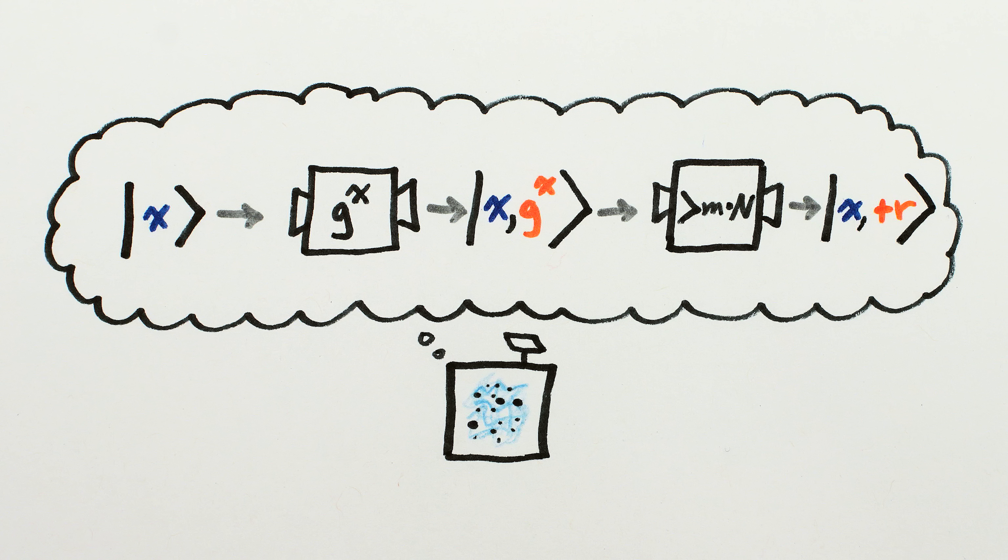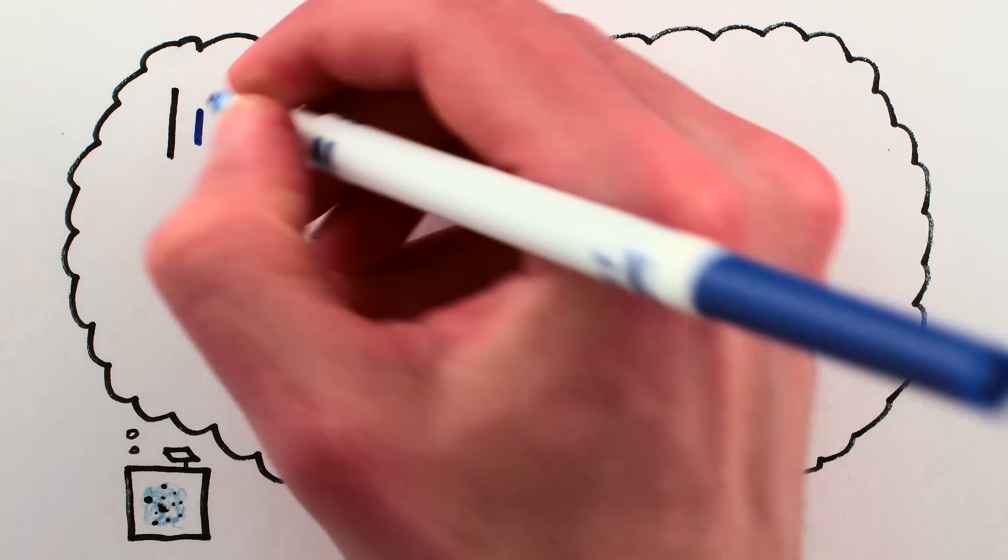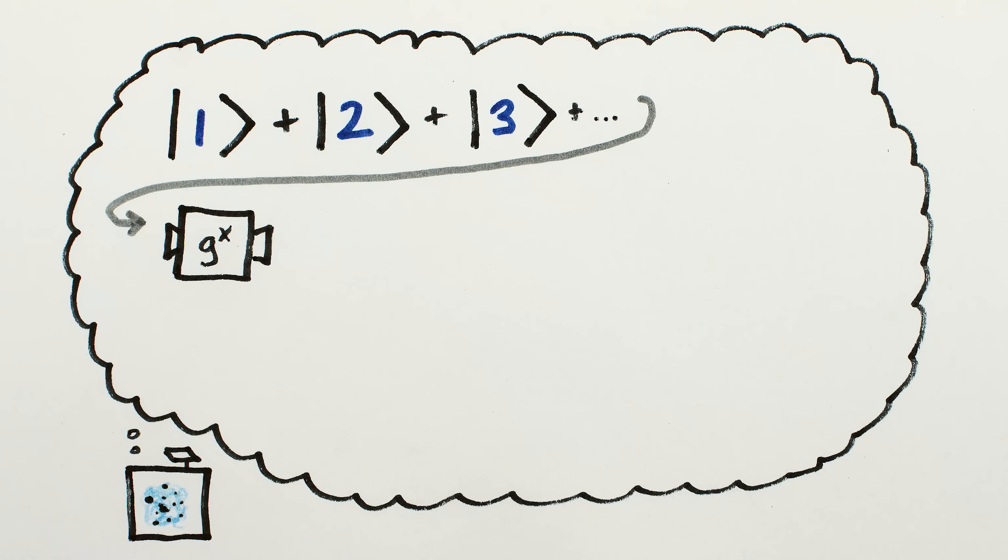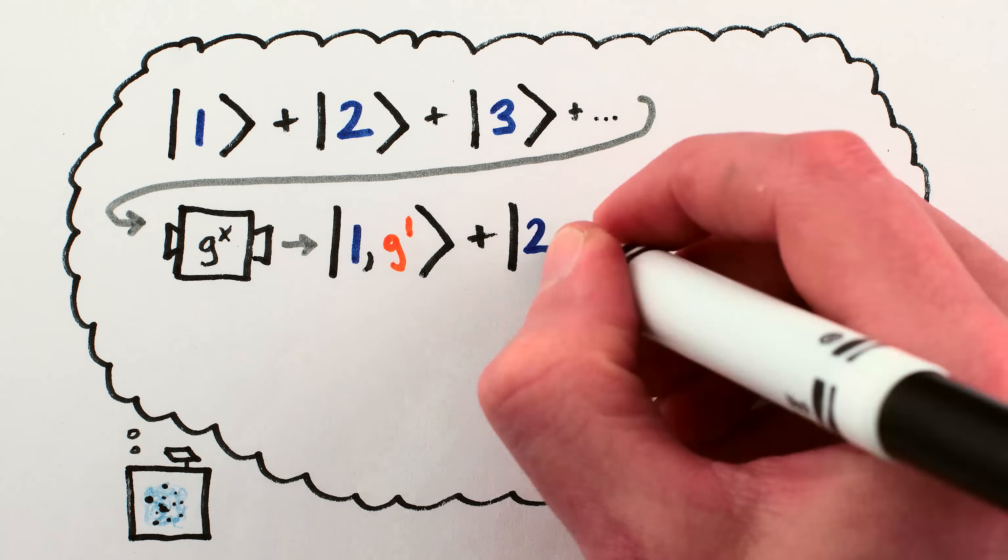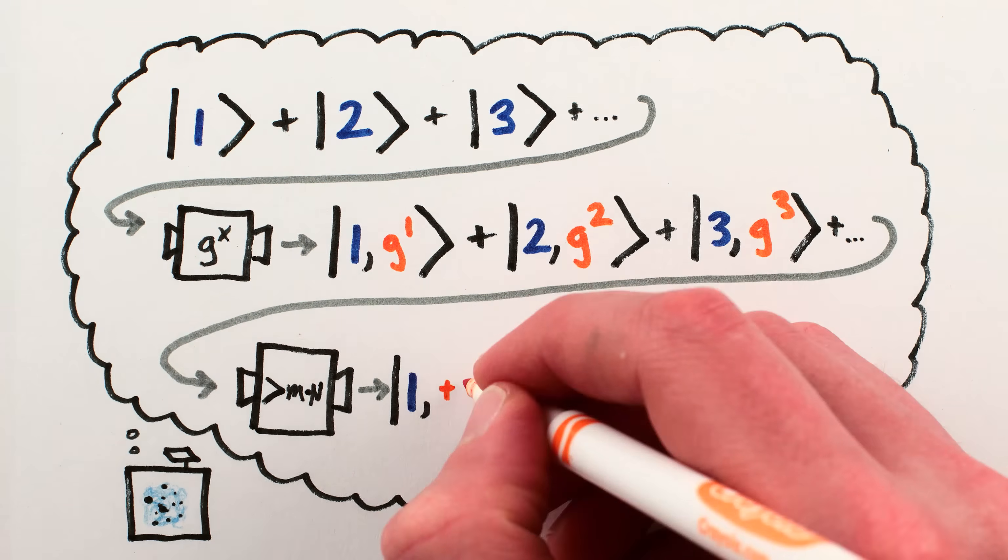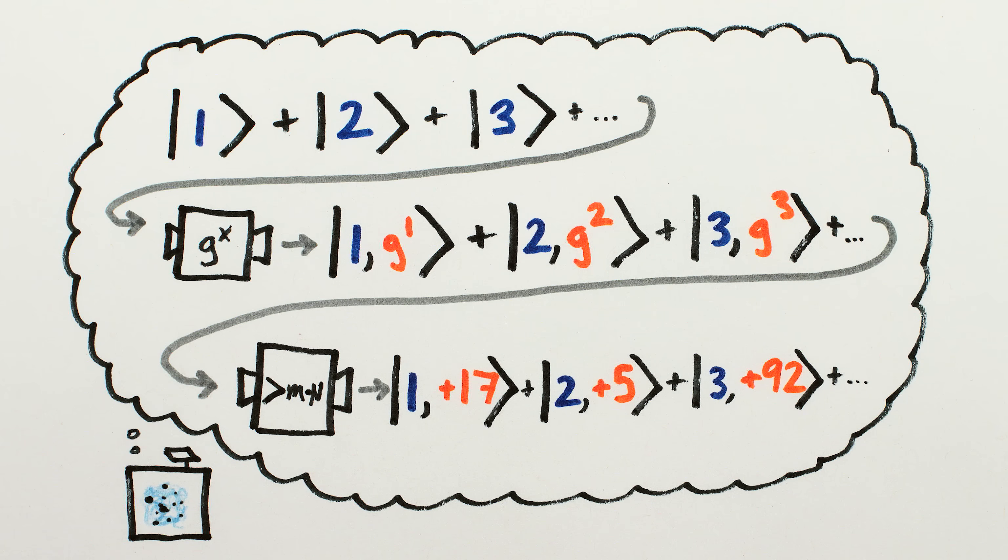So far, no different from a normal computer. But since it's a quantum computer, we can send in a superposition of numbers, and the computation will be done simultaneously on all of them, first resulting in a superposition of all possible powers our guess could be raised to, and then a superposition of how much bigger each of those powers are than a multiple of n.